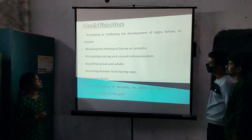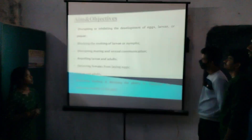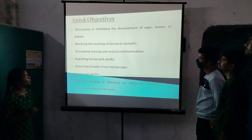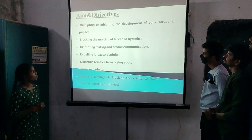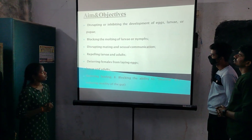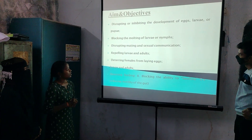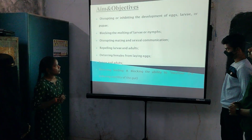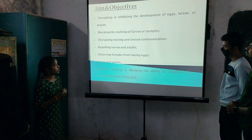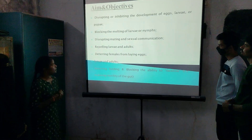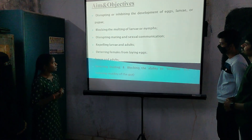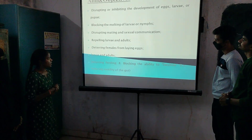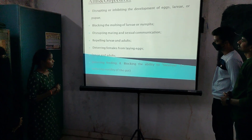What are the aims and objectives? First is disrupting or inhibiting the development of eggs, larvae, or pupa; blocking the molting of larvae and nymphs; disrupting mating and sexual communications; and repelling larvae and adults; deterring females from laying eggs, larvae and adults; deterring feeding.